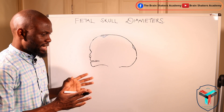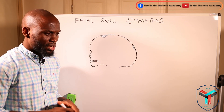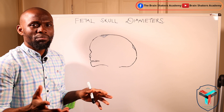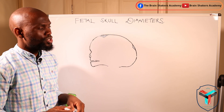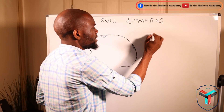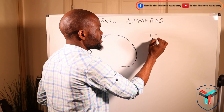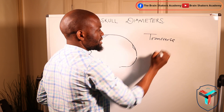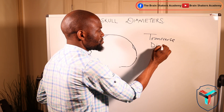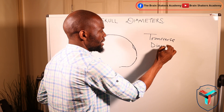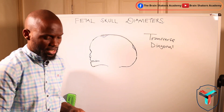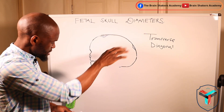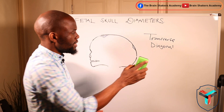as we look at fetal skull diameters, it is important to mention that fetal skull diameters can be divided into two. That is, we have what we refer to as the transverse diameters and then we also have what we refer to as diagonal diameters. Now let's quickly look at what transverse diameters are.